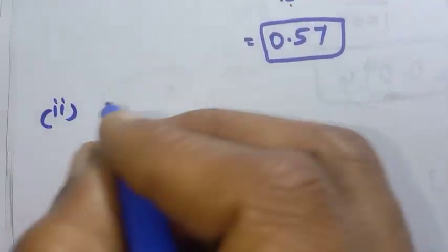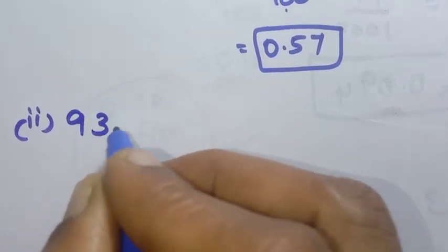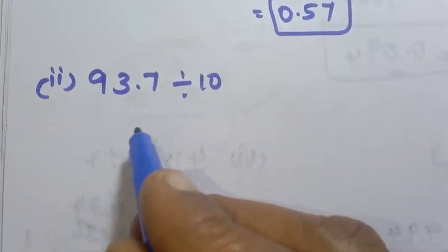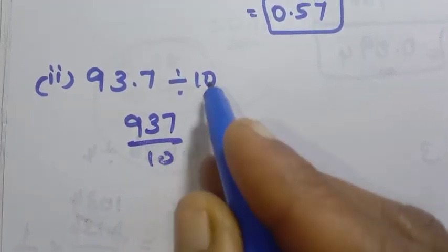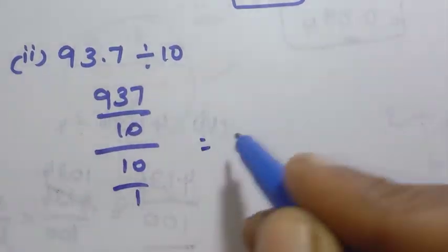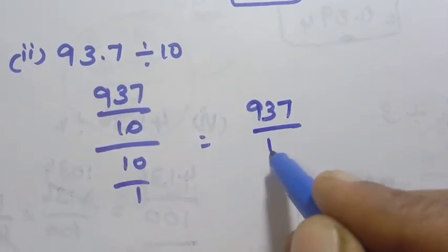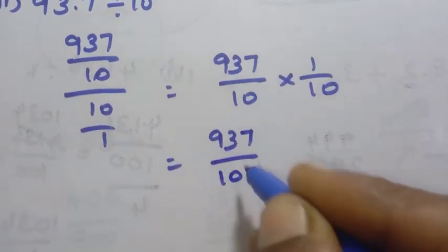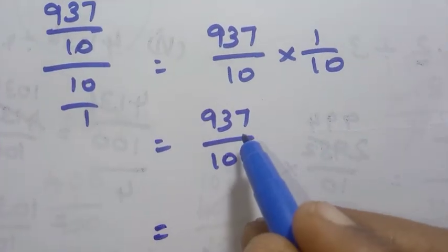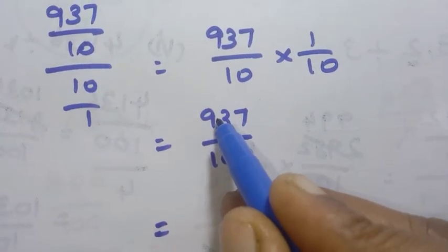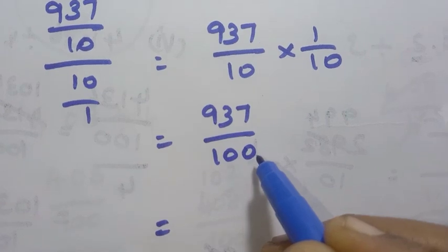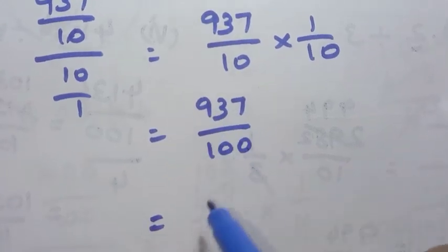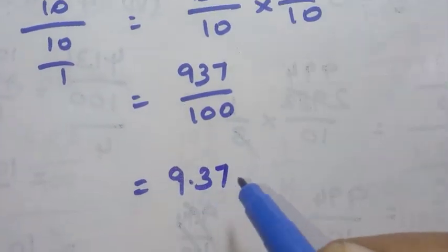Second question: 93.7 divided by 10. 93.7 is 937 by 10. Divided by 10 by 1, so 937 by 10 into 1 by 10 gives 937 by 100. There are 2 zeros, so 2 decimal places: the answer is 9.37.